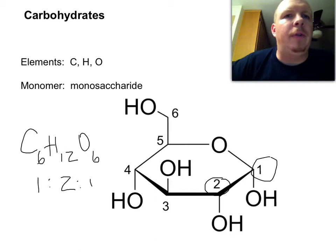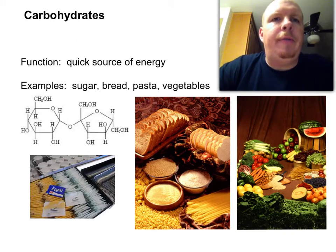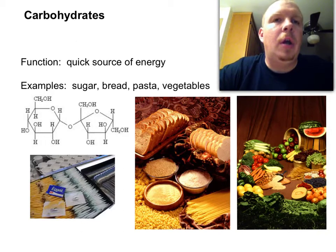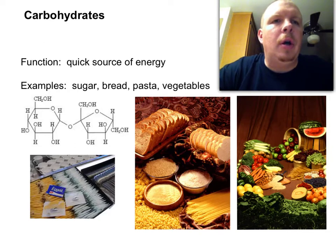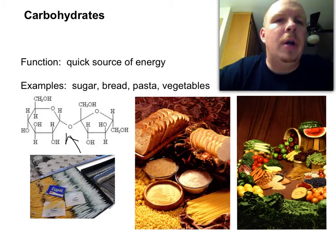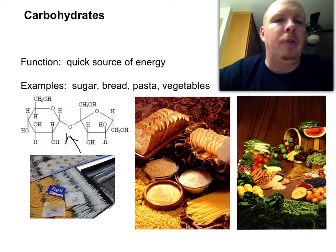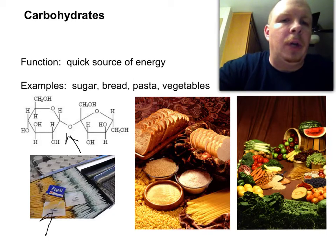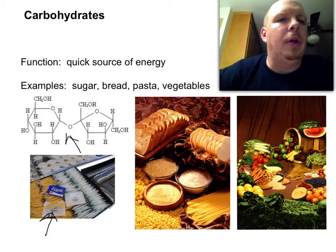The function of carbohydrates is a quick source of energy. When you are hungry and need energy, the primary place you're going to get it from will be carbohydrates. Some examples include sugar, bread, pasta, and vegetables. This molecular diagram is a picture of sucrose, also known as table sugar — you can see it's two glucose molecules stuck together. And then there are pictures of sugar, bread, grains, pasta, and vegetables.